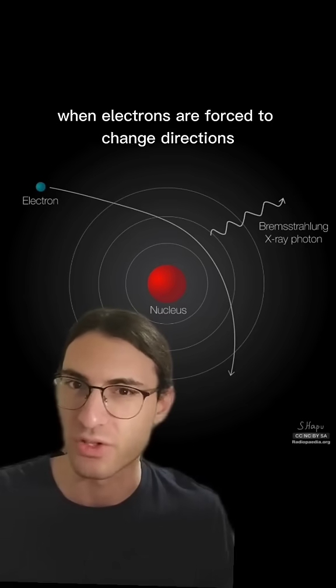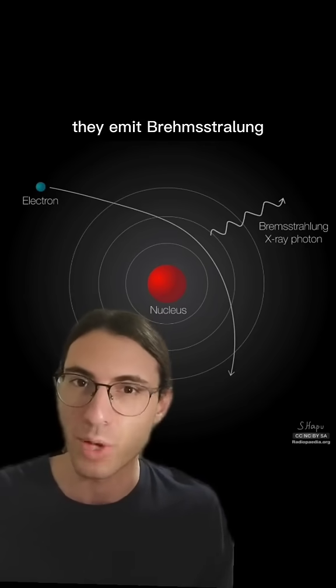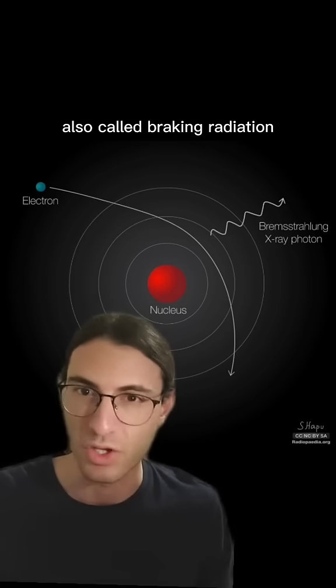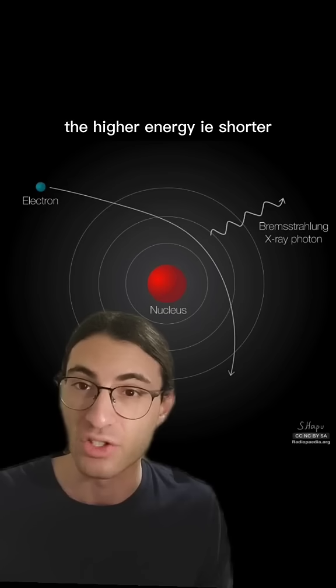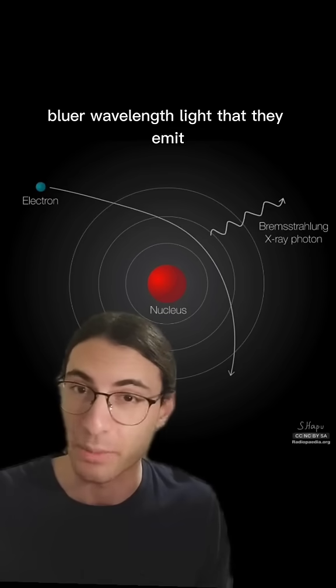But an interesting thing happens when electrons are forced to change directions. They emit bremsstrahlung, also called braking radiation. The faster they turn, the higher energy, i.e. shorter, bluer wavelength light, that they emit.